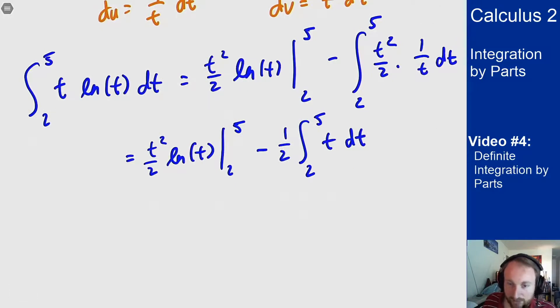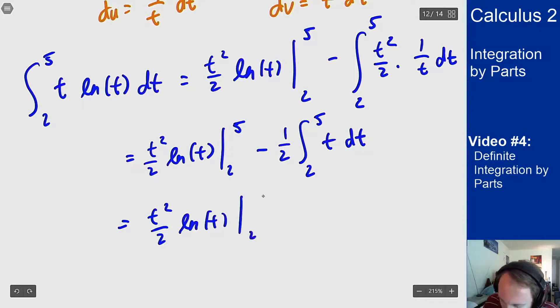I can integrate that last term now, that's an easy one to integrate. t squared over 2 log of t from 2 to 5 minus t squared over 4, also from 2 to 5.